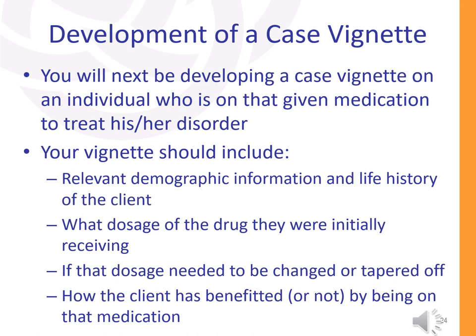Based on the research you have obtained, you will next be developing an original case vignette on an individual who is on that given medication to treat his or her disorder. Your vignette should include the relevant demographic information and life history of the client, what dosage of the drug they were initially receiving to relieve their symptoms, if that dosage needed to be changed over time or tapered off, and finally how the client has benefited or not by being on that particular medication. Please review past modules' vignettes when developing yours to make sure it is descriptive and thorough enough in presenting all of the information.